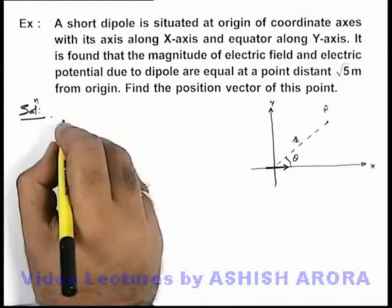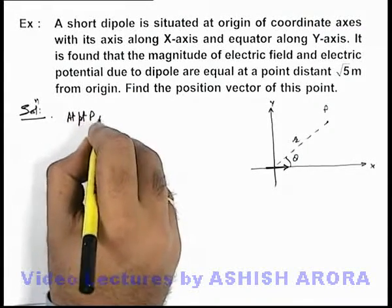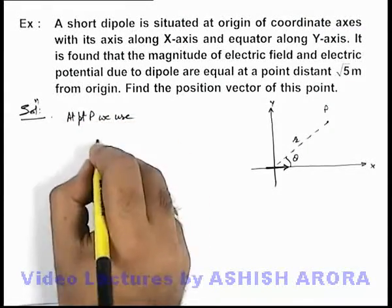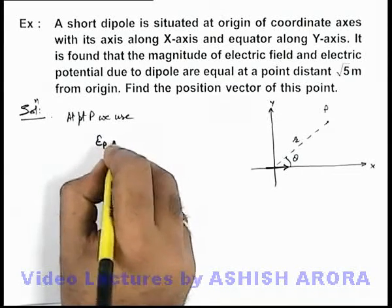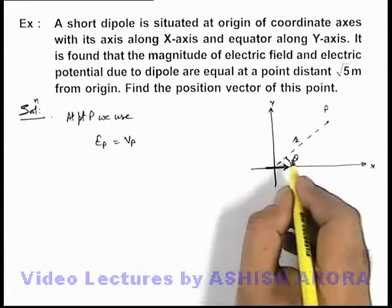Then we can say, as given in the problem, at point P, the magnitude of electric field is equal to the magnitude of potential.